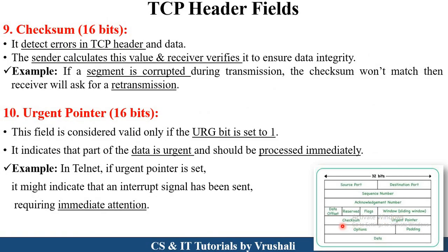The next field is the checksum field. The checksum field is generally used to detect errors in the TCP header or in the actual information. Checksum works like a security or privacy mechanism — the sender sends information along with a checksum value. The receiver also verifies that checksum. If both checksums match, then the accurate information has been received. If the receiver's checksum and the sender's checksum are different, then there are errors in that information and they can't ensure the integrity of the data.